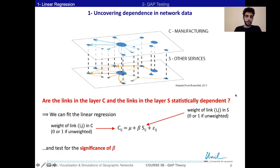What we can do is fit the linear regression. Here we look at the linear relation between the links in layer C with their equivalents in layer S. Again, we can test for the significance of β.